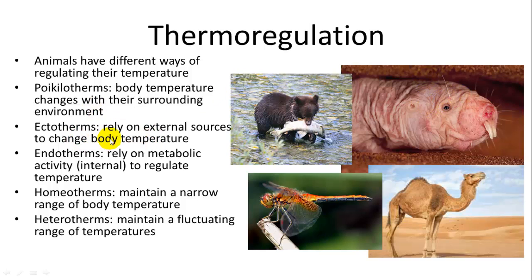Ectotherms rely on external sources to change their body temperature — like a dragonfly or a fish. Most reptiles, for example, will bask in the sun to get warm and go into a burrow to get cool. A fish might swim up and down in the water column depending on the different temperatures.